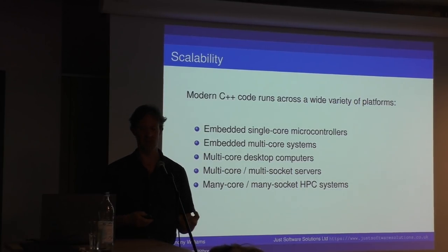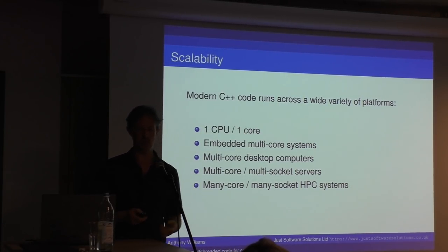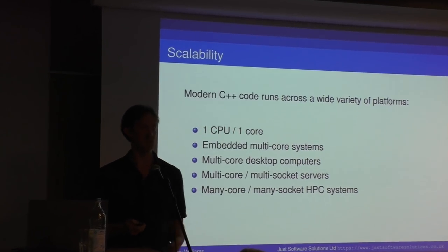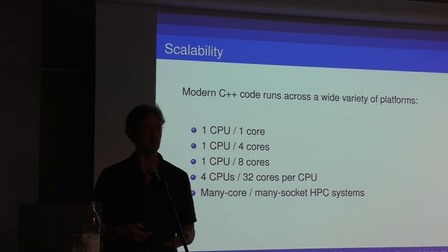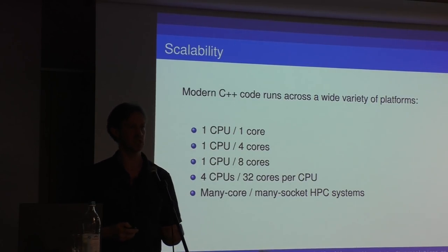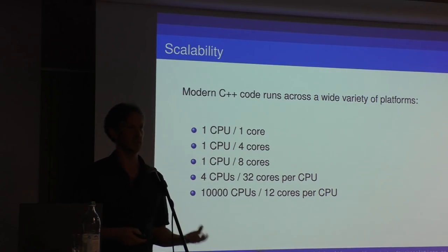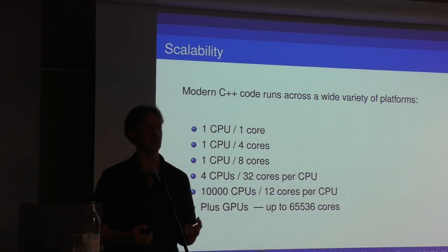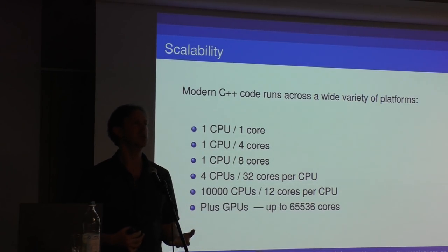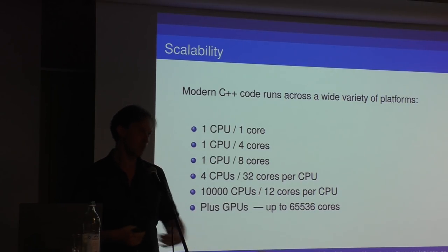A multiprocessor HPC rack with many sockets and many cores. We're looking at one CPU with one core, with four cores, eight cores, four CPUs with 32 cores each, and maybe 10,000 CPUs with 12 cores per CPU on an HPC rack. And then we're looking at GPUs — GPUs might have 65,000 cores per GPU, and some people put racks with multiple GPUs in.